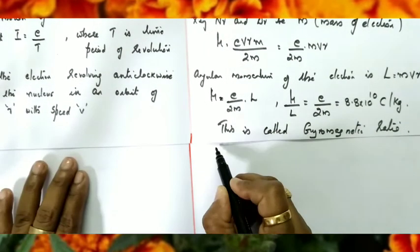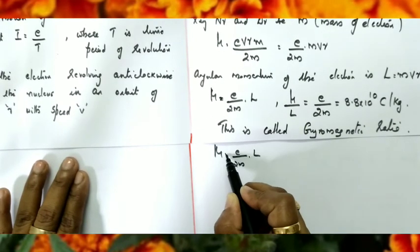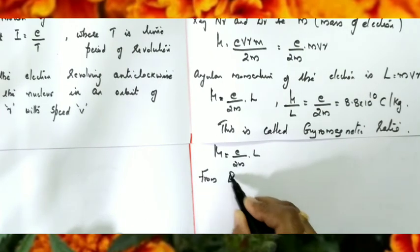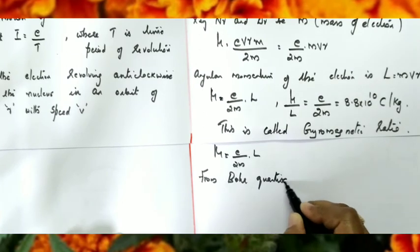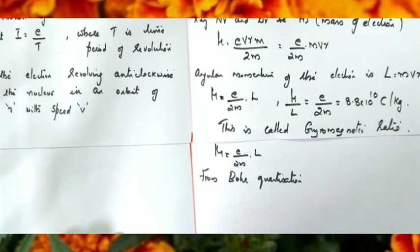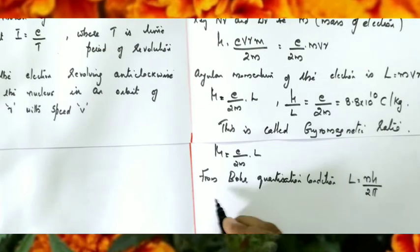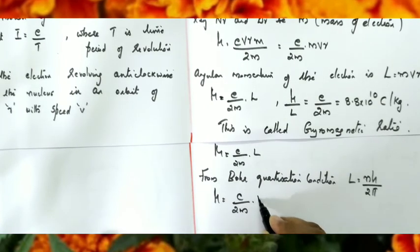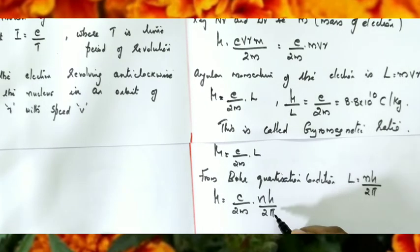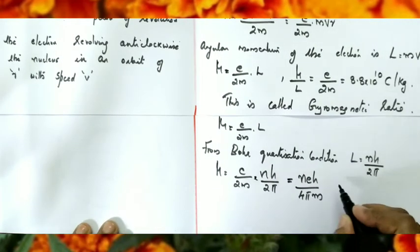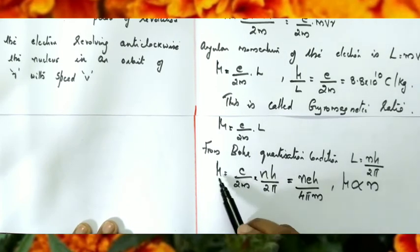From Bohr's quantization condition, the angular momentum L = nh/2π, where n is the principal quantum number and h is Planck's constant. Substituting into μ = (e/2m)·L, we get μ = neH/4πm. This shows that magnetic dipole moment is directly proportional to the principal quantum number n.